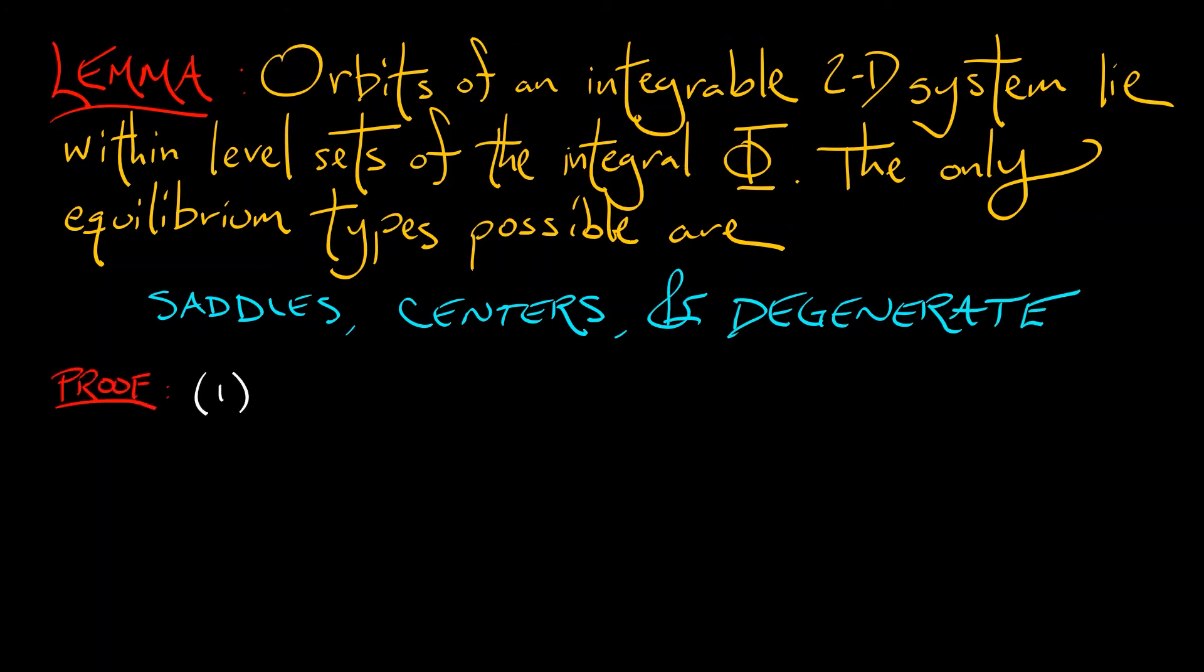Here's a proof. The first item, well, that's by definition. If the integral is constant along orbits, then the orbits lie within level sets. No big deal there.